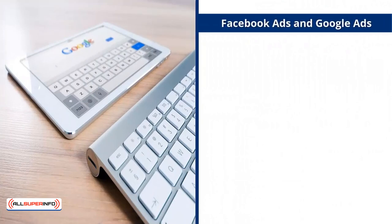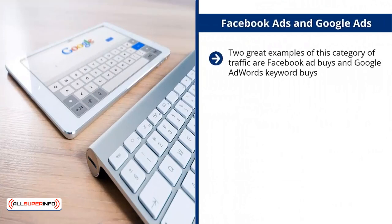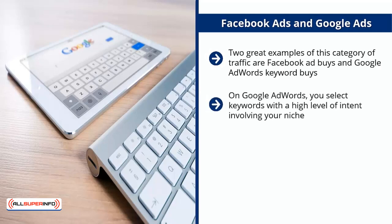Two great examples of this category of traffic are Facebook ad buys and Google AdWords keyword buys. In the case of Facebook, you buy traffic directly to a link, add a picture and a short description, then target certain populations and make guesses regarding interest profiles. On Google AdWords, you select keywords with a high level of intent involving your niche — these keywords indicate a high willingness to buy whatever it is you're promoting.